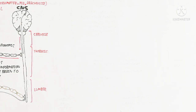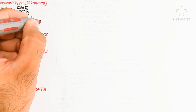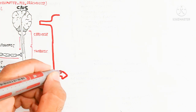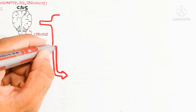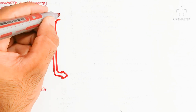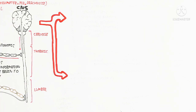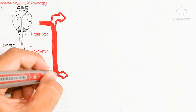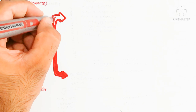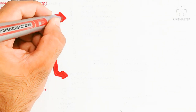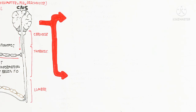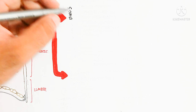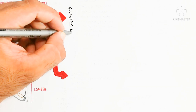The peripheral nervous system is made up of the somatic nervous system as well as the autonomic nervous system. The somatic nervous system is voluntary — we can control it. The autonomic nervous system is involuntary — we cannot control it.